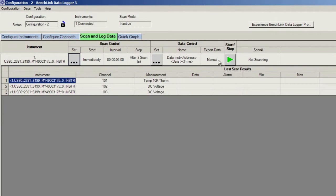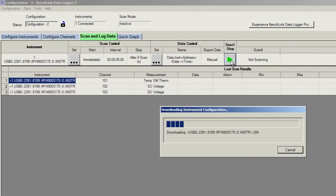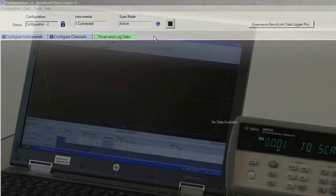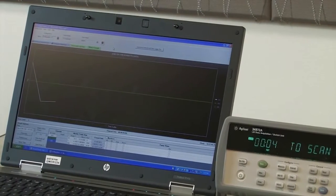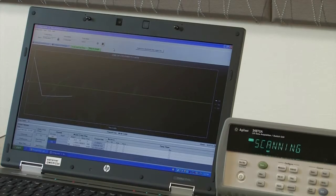We're going to overwrite the data that's currently in the 34972. We'll look at this as a graph. So as the data is taken, it's coming back to the PC and being plotted so that we can verify the data in real time and make sure that the data, as it's being scanned, makes sense.